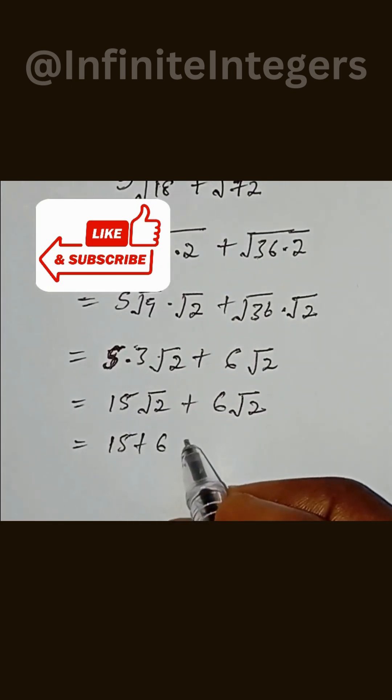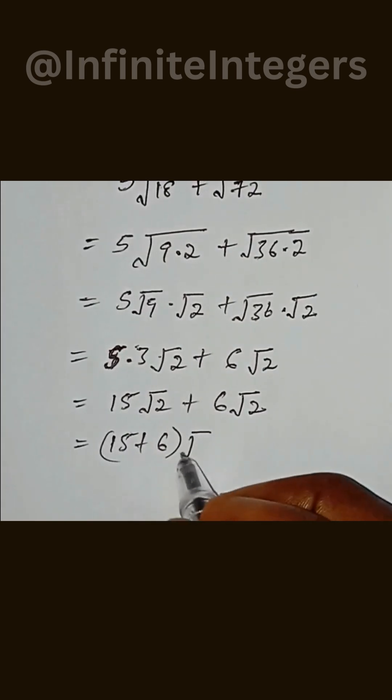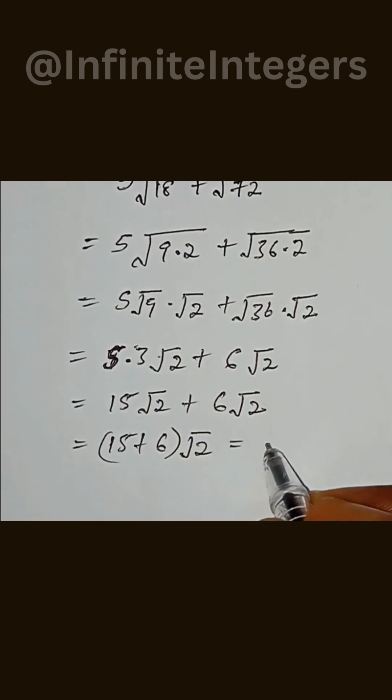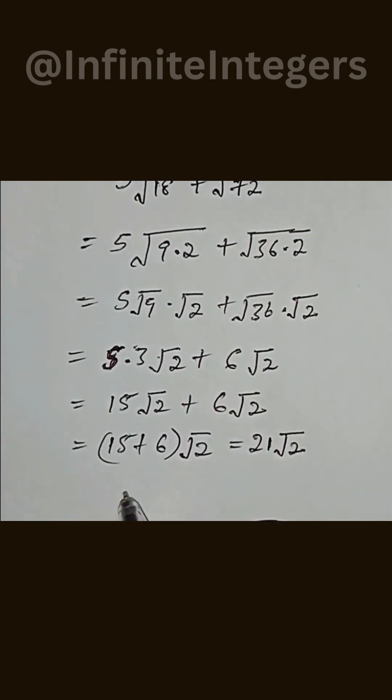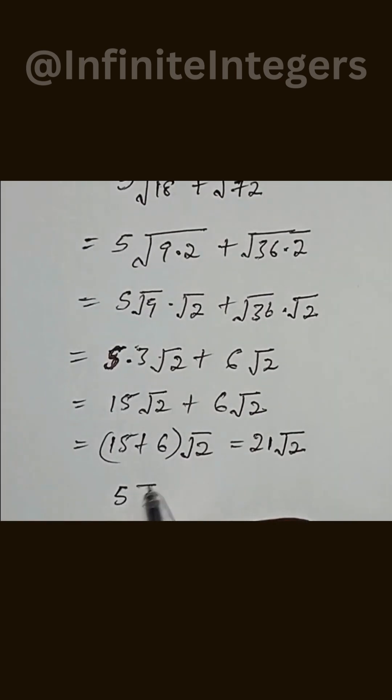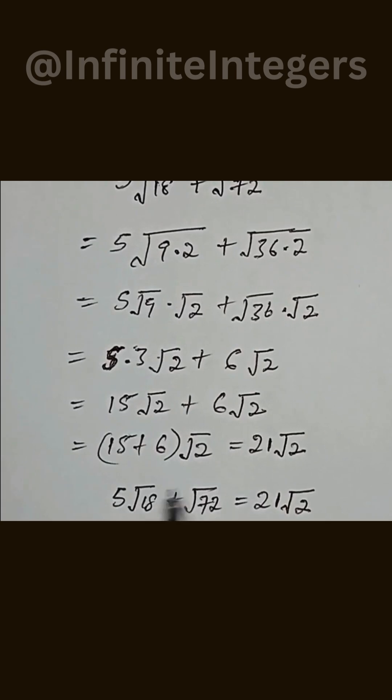And this is equal to 21 square root 2. This means that 5 square root of 18 plus square root of 72 is equal to 21 square root 2.